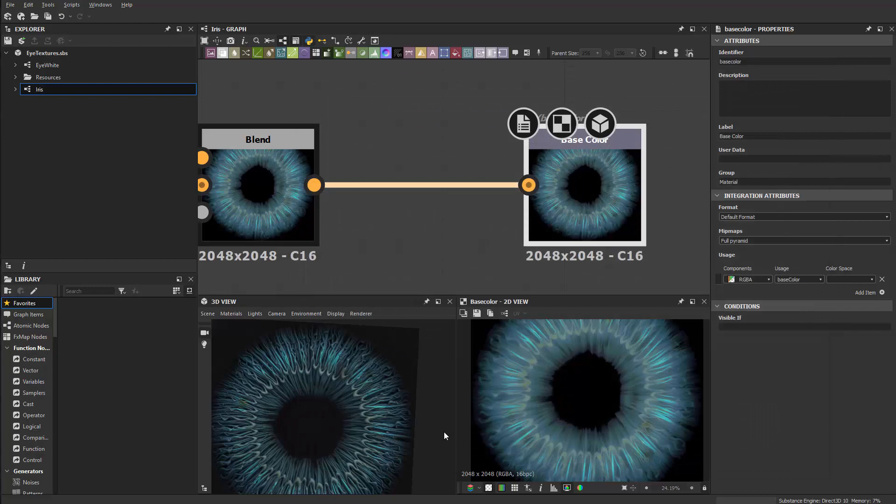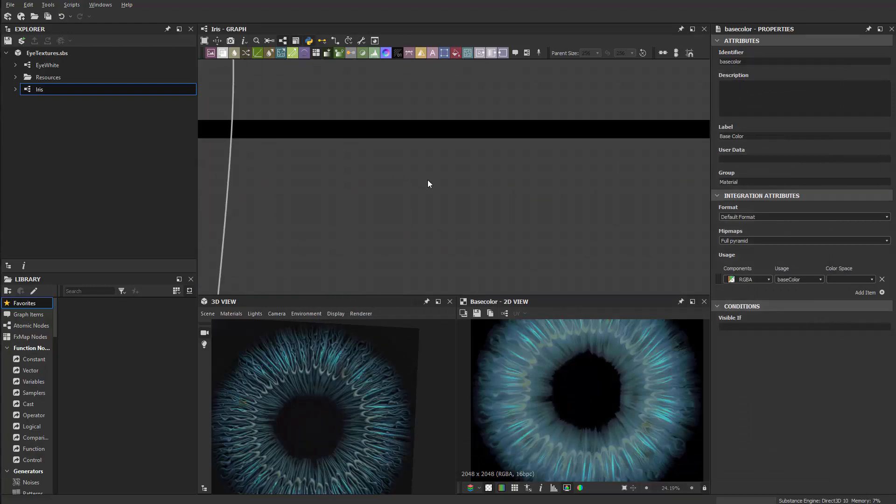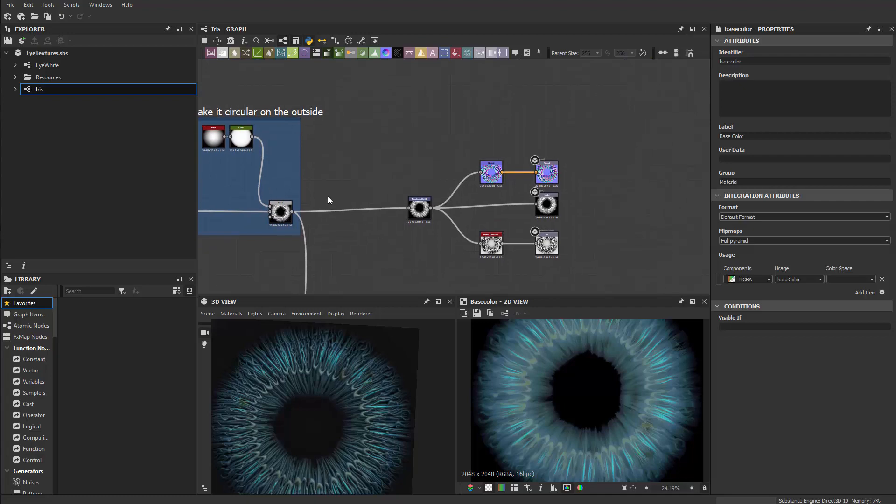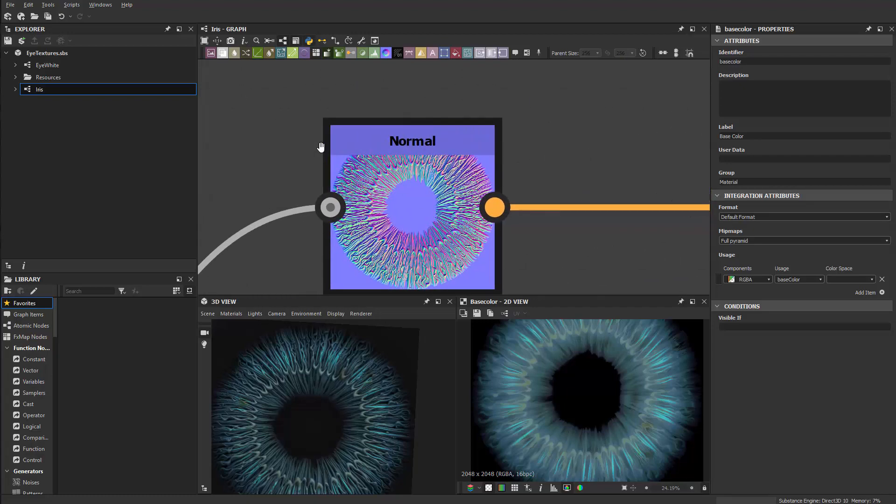After that, we need to also grab... I'm not sure if I really need to use the normal for now, so let's leave that there. Back here to the eye white, I do want to get the normal here.